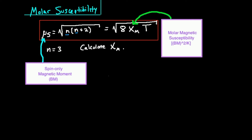The other important thing you really need to remember is what the question gives you. It's really easy to confuse x sub m, the molar magnetic susceptibility, and mu sub s, the spin-only magnetic moment. You have to pay close attention to what the problem gives you and what it's asking you to solve for. In this problem, I'm going to give you n equals 3 — n is the number of unpaired electrons — and I'm going to ask you to calculate the molar magnetic susceptibility and the spin-only magnetic moment.